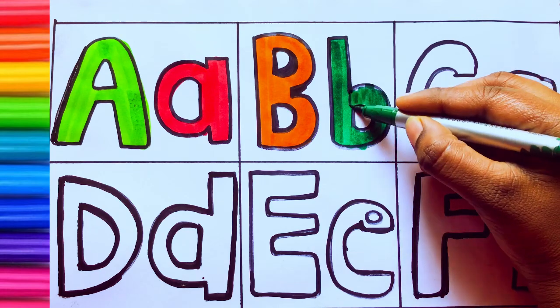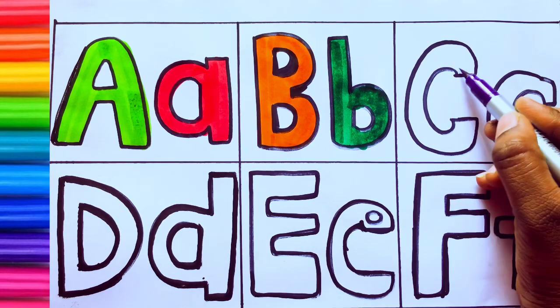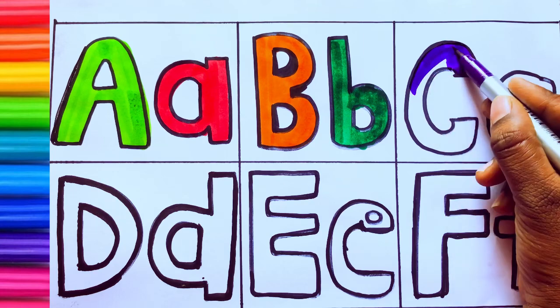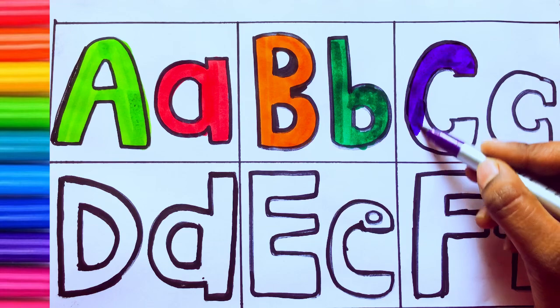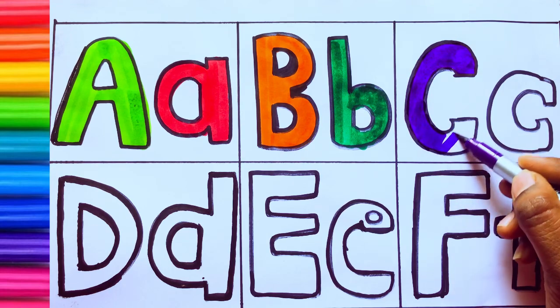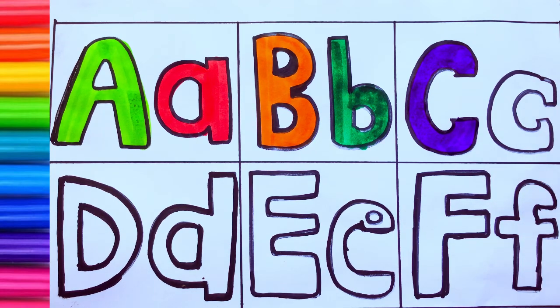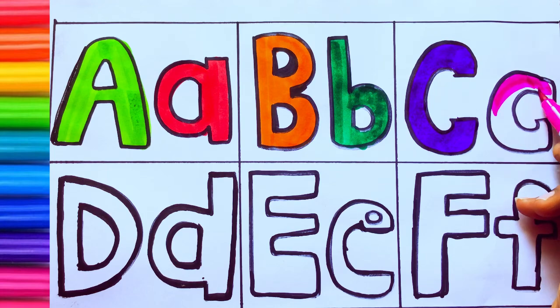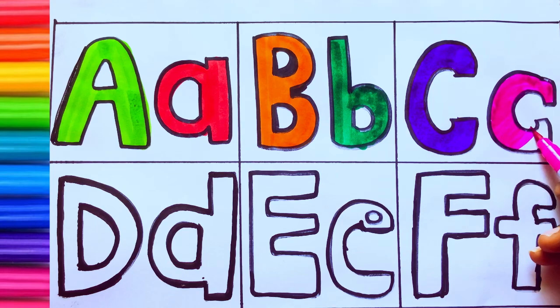Violet color, blue color. C, C for cat. C, C for cat, capital C. C for cat. Pink color, C, small c. Small c, C for cup, cup.